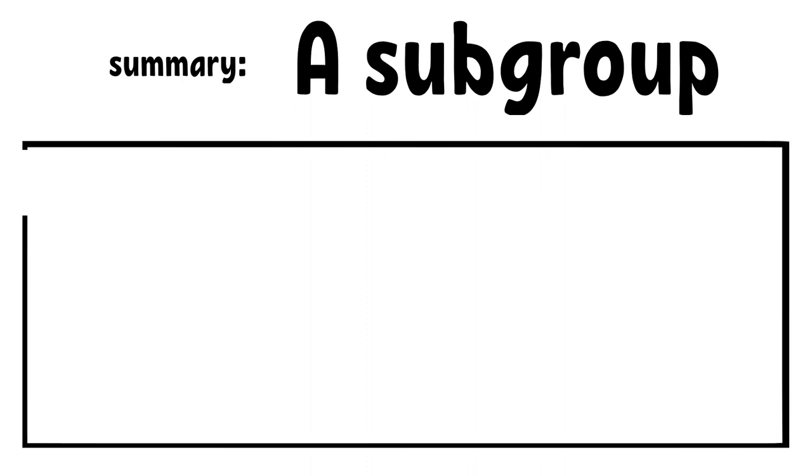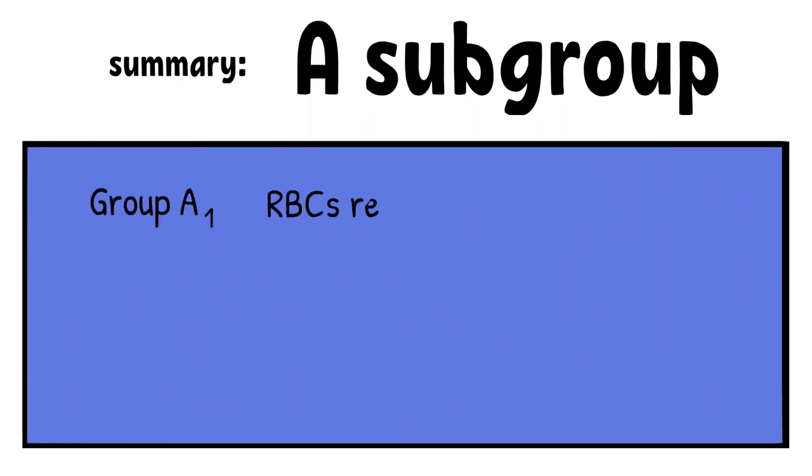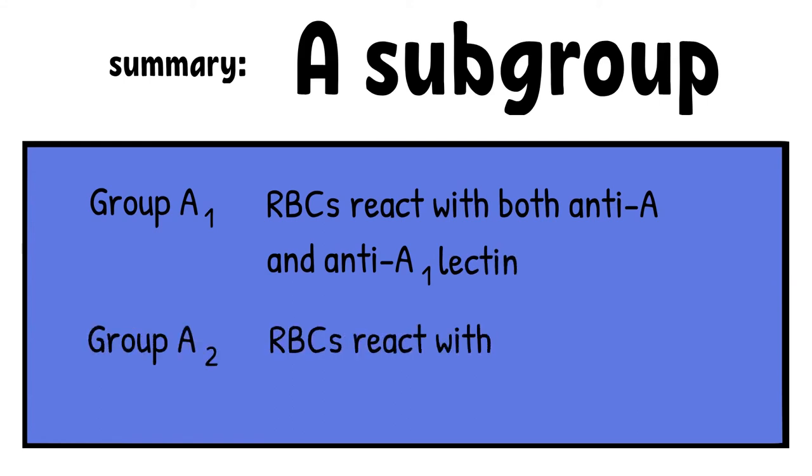In short, group A1 RBC reacts with both anti-A and anti-A1. Group A2 RBC reacts with only anti-A and not anti-A1 lectin.